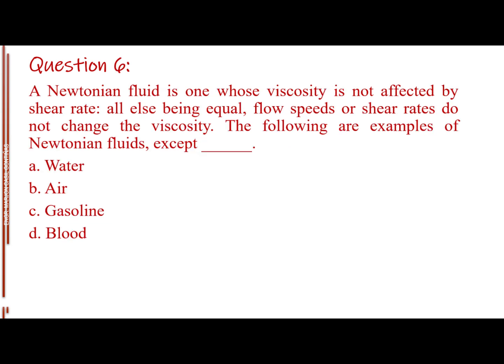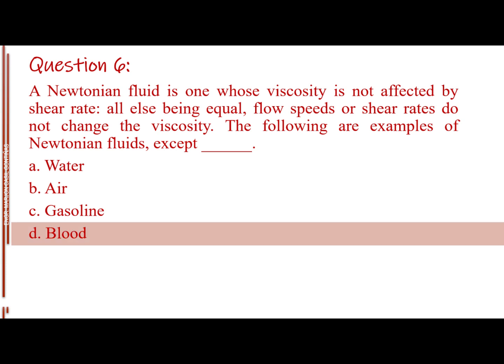Question number 6. A Newtonian fluid is one whose viscosity is not affected by shear rate; all else being equal, flow speeds or shear rates do not change the viscosity. The following are examples of Newtonian fluids, except blank. Letter A, water. Letter B, air. Letter C, gasoline. Letter D, blood. The answer is Letter D, blood.